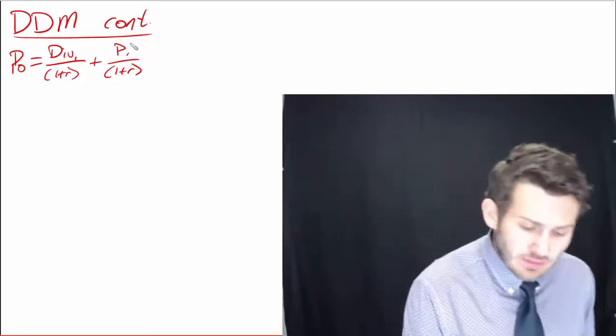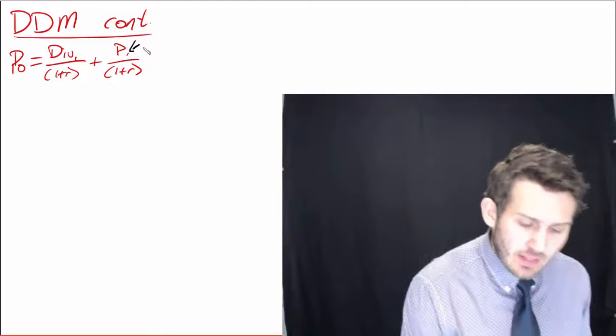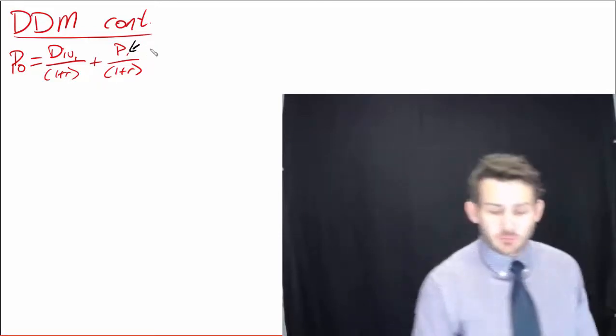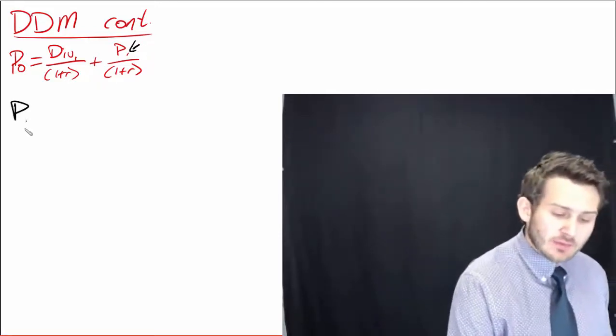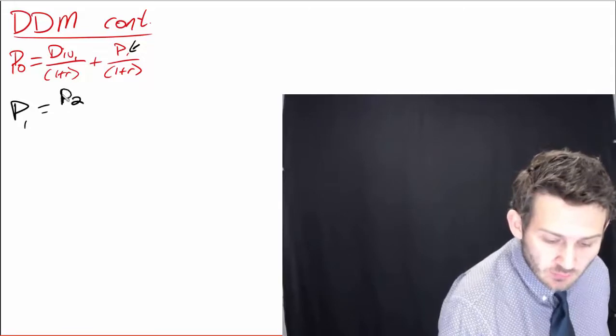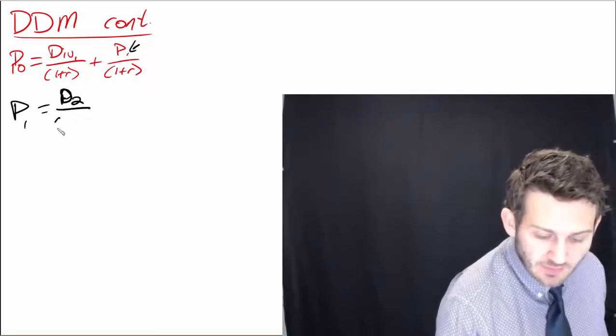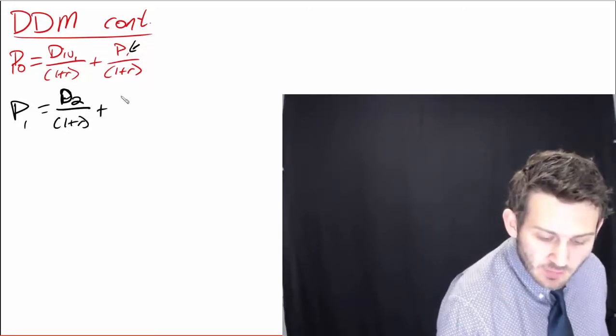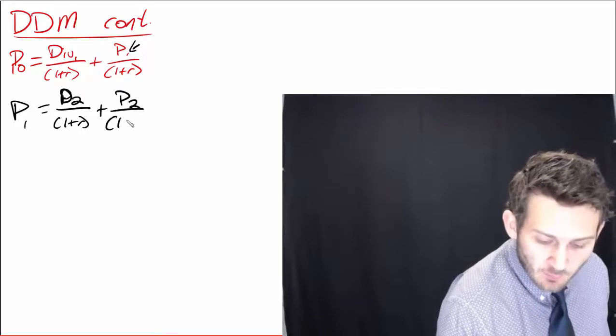Now, the thing that we're looking at here is where does that P1 actually come from? So if we do this, if we lag this back one time period, we drop it back one time period. We say that P1 is equal to D2, our dividend in our second time period, plus P2, divided by 1 plus R.